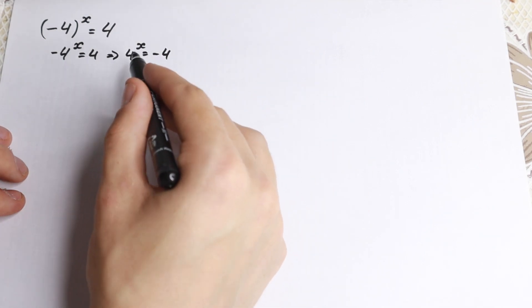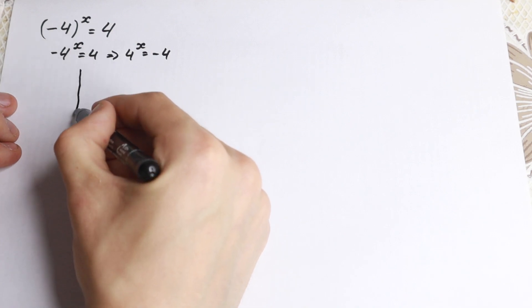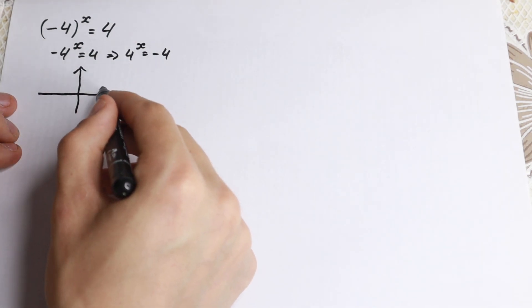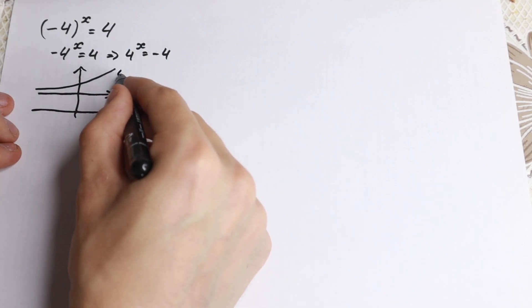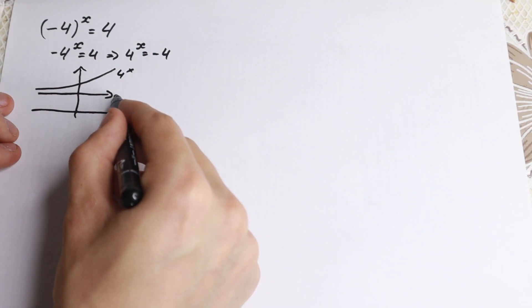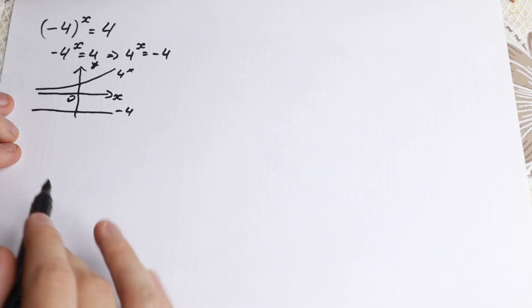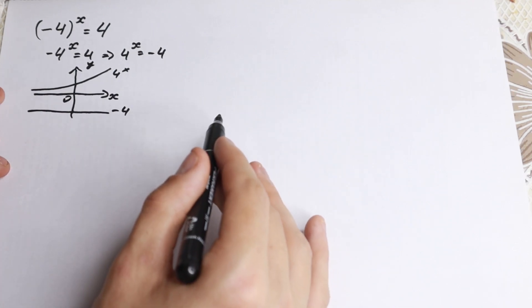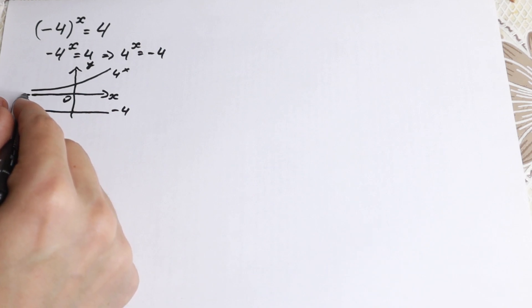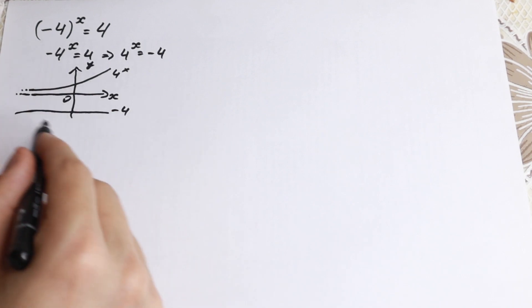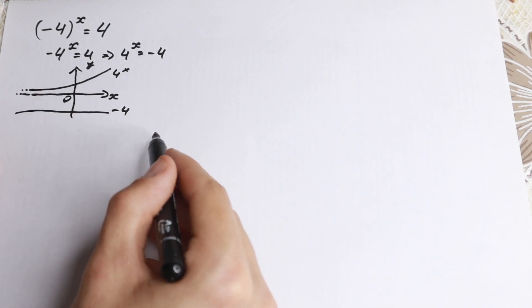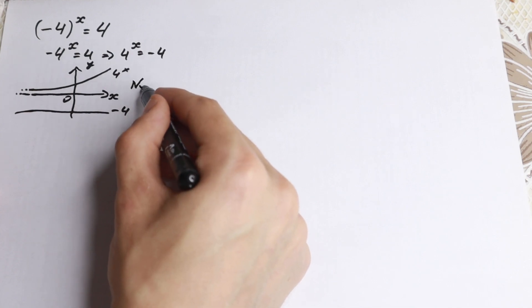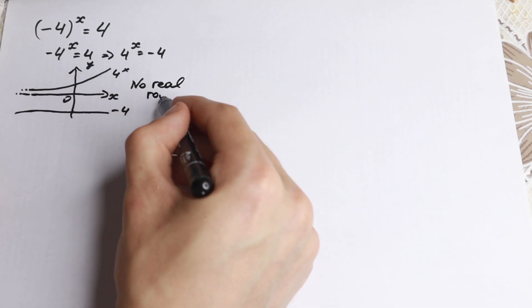The best way to see a root is to draw a quick graph. Here 4 to the x is our increasing exponential function, and minus 4 is a constant function. If you look closely, we have a root at the point of intersection, but this exponential function does not intersect with this line right here — it goes closer and closer but never reaches minus 4, which is a constant. So as a result, we will have no real roots.